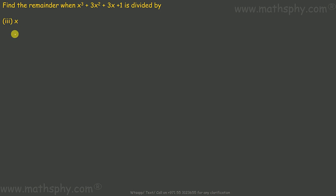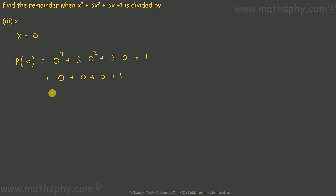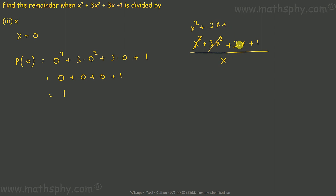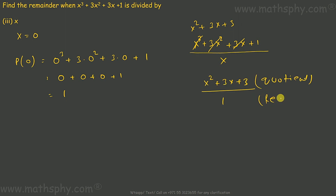For the third divisor, x: its zero is 0. Replace all x's with 0: 0³ + 3(0²) + 3(0) + 1 = 1. So dividing by x gives a remainder of 1. A quick check by division also confirms: the polynomial divided by x gives quotient x² + 3x + 3 with remainder 1.